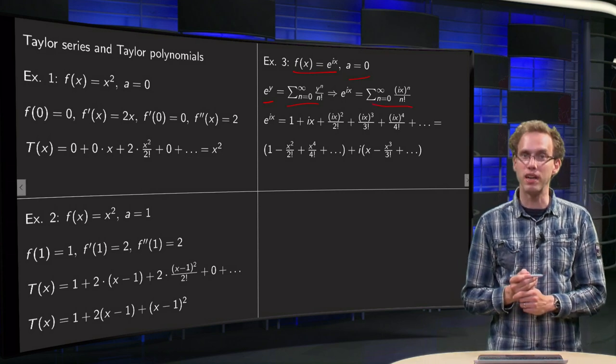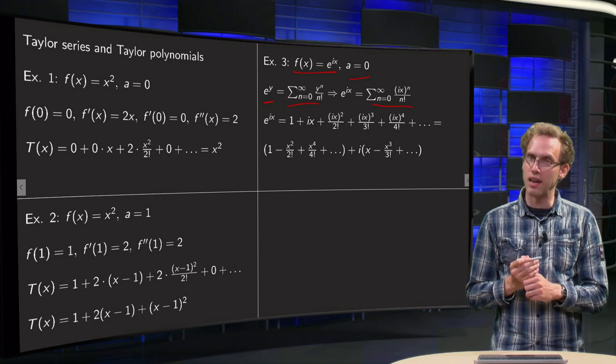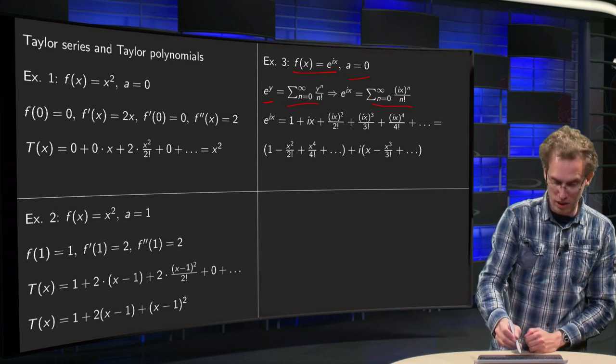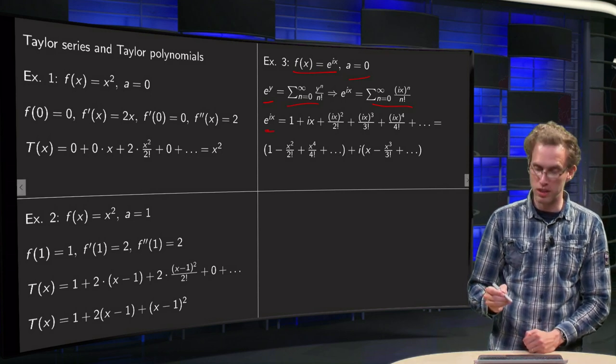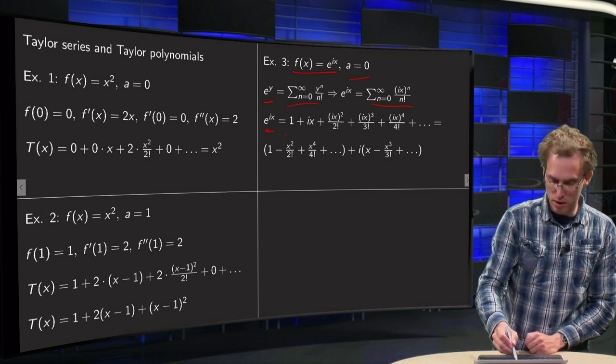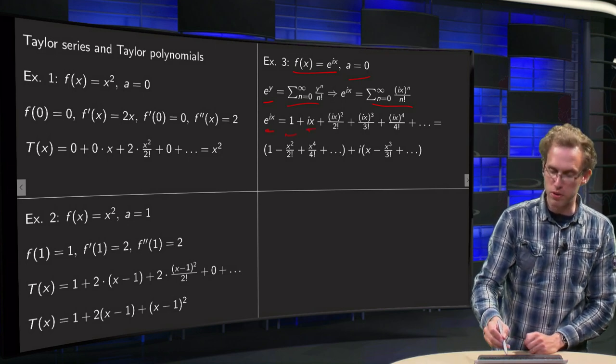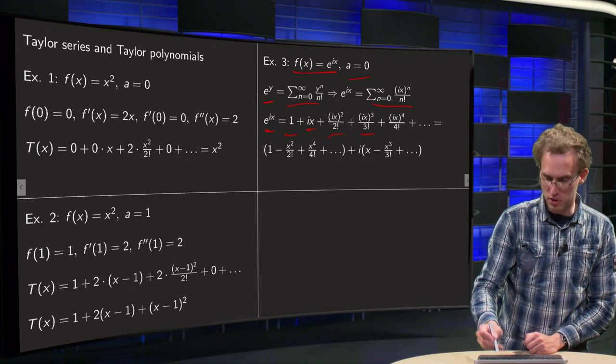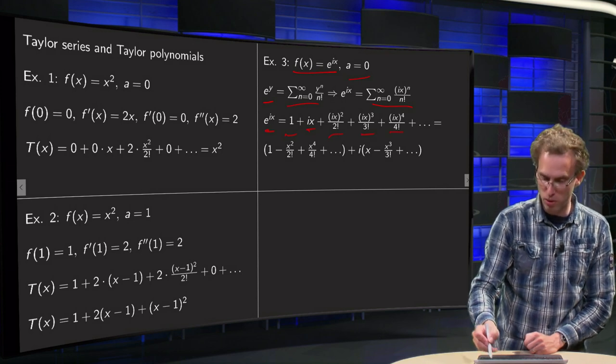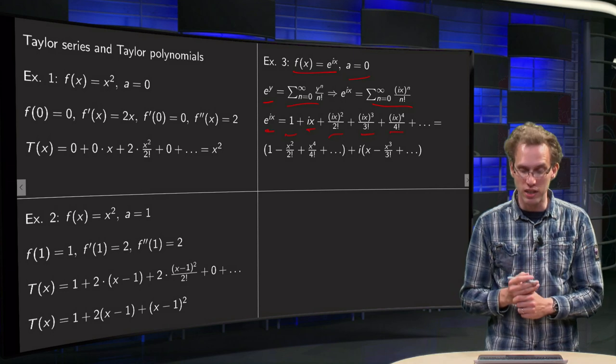Well, we will get this, right here, and let's write down the first few terms. So e^(ix), what does that yield? 1 + ix + (ix)²/2! + (ix)³/3! + (ix)⁴/4!, etc., etc.